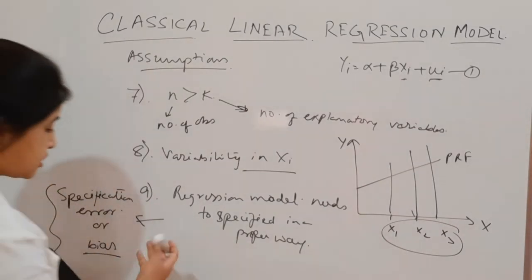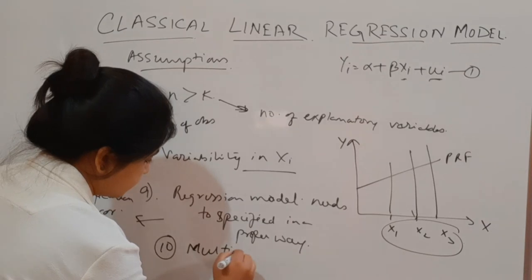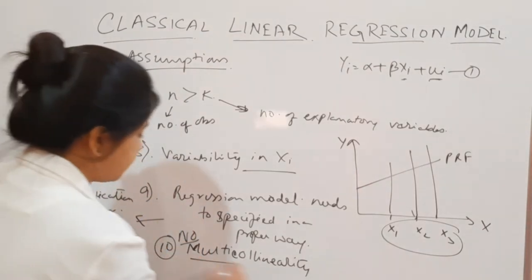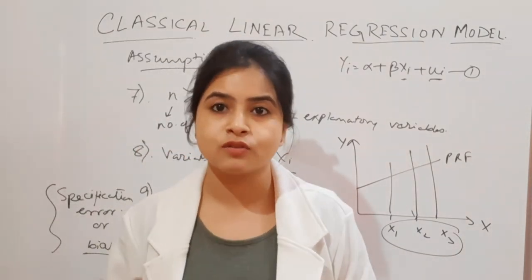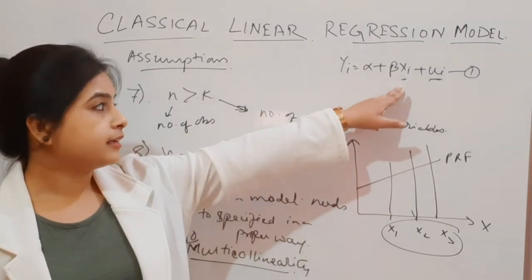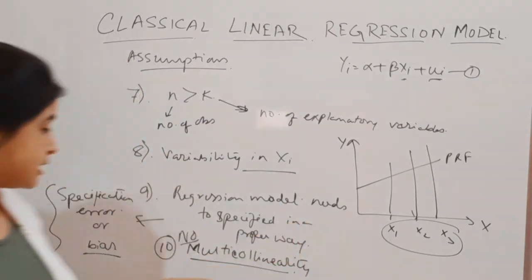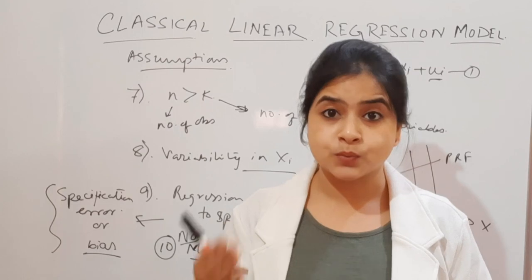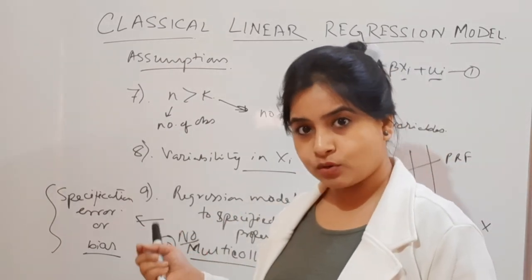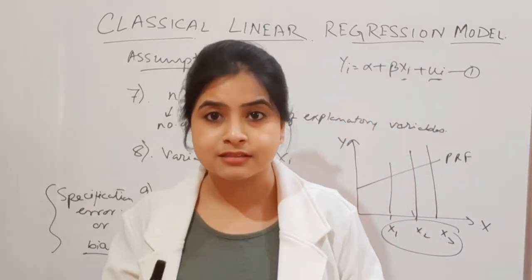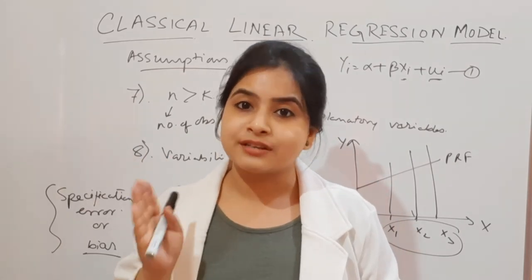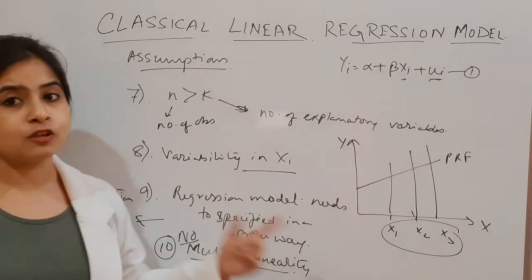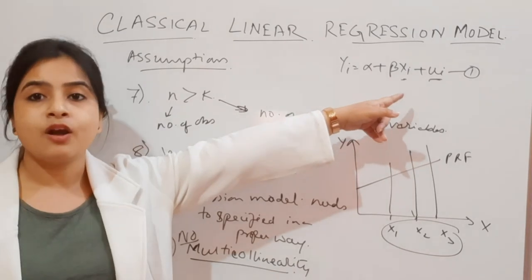Finally, we move to assumption number 10: no multicollinearity. This assumption does not play a very important role in the simple CLRM because here we have only one regressor. Multicollinearity becomes relevant when we have more than one regressor. Multicollinearity is the situation when two regressors are related to each other — a relation between two regressors is not appreciated in the analysis. That is why no multicollinearity is one of the assumptions of CLRM, playing a role when there is more than one regressor.